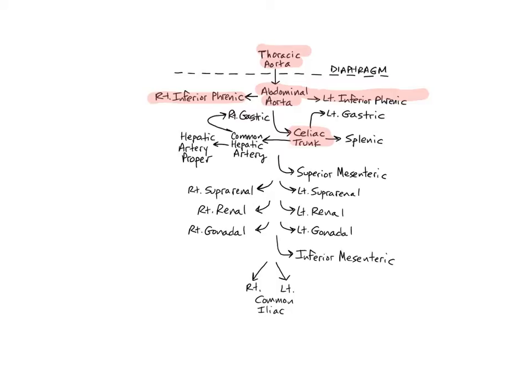The celiac trunk is the first unpaired branch of the abdominal aorta, branching just below the diaphragm as the aorta passes through the hiatus. The word celiac refers to the abdomen, and this artery divides into three abdominal branches: the left gastric, splenic, and common hepatic arteries.